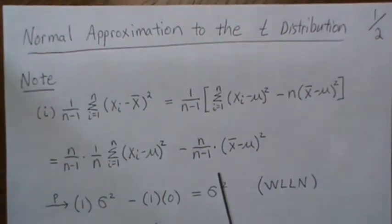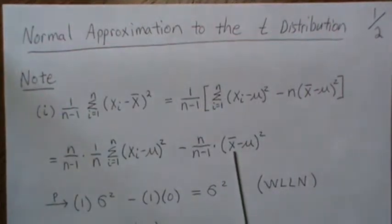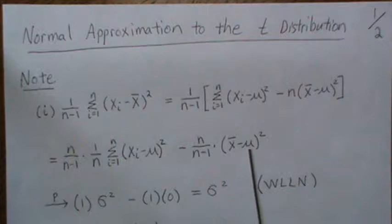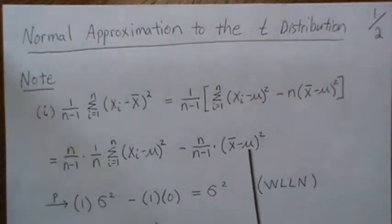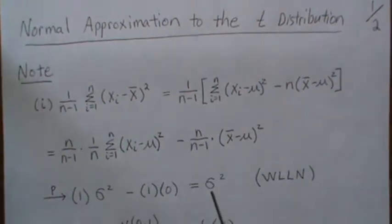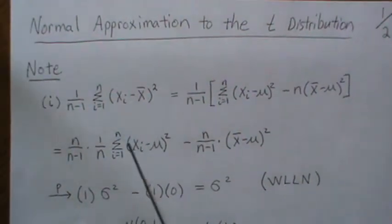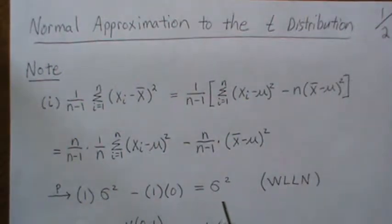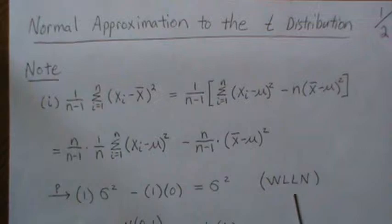Now by the weak law of large numbers, the sample mean converges to its expected value, the population mean, in probability. This is a sample mean too, so its expected value is sigma squared. This difference converges in probability to 1 times sigma squared minus 1 times 0, which is sigma squared. So the sample variance converges to the population variance by the weak law of large numbers.